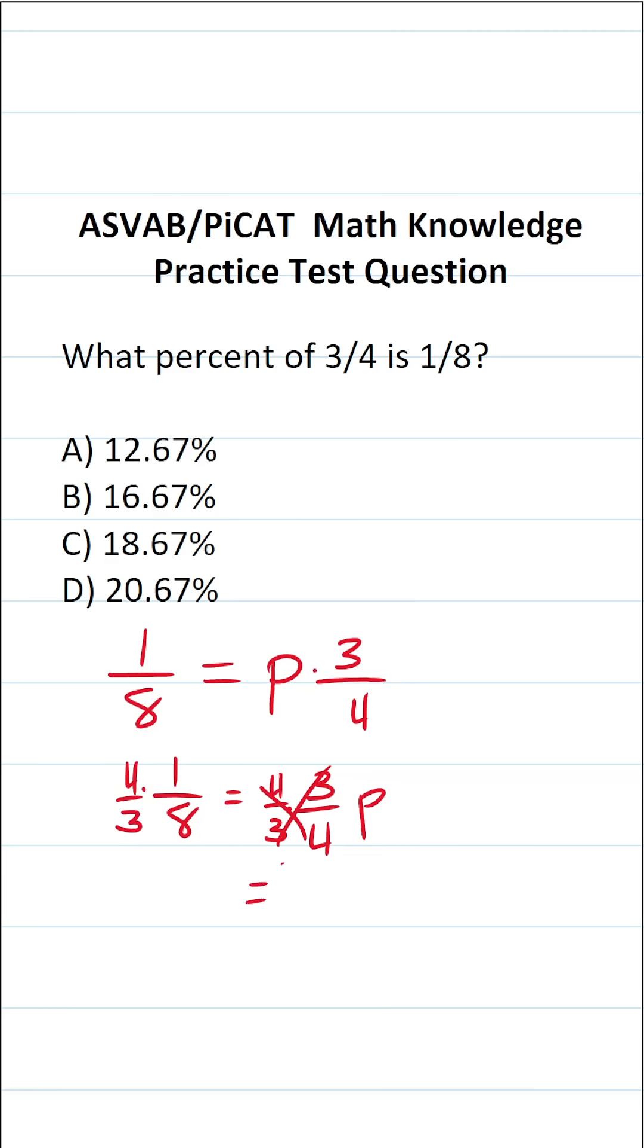This crosses out here and here, leaving you with P on this side. When you multiply fractions, you just multiply straight across. This becomes four times one, which is four, over three times eight, which is twenty-four.